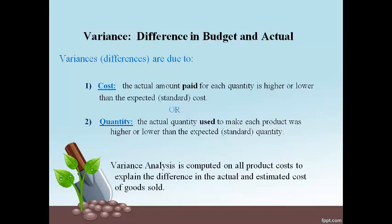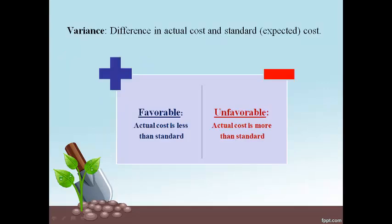The purpose of variance analysis is to explain the difference in the estimated and actual cost of goods sold. A variance is either favorable or unfavorable. A favorable variance occurs when the actual cost is less than the estimated cost, giving higher profits. An unfavorable variance occurs when the actual cost is more than the estimated cost, giving lower profits.